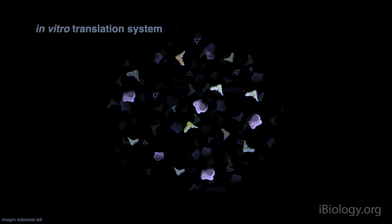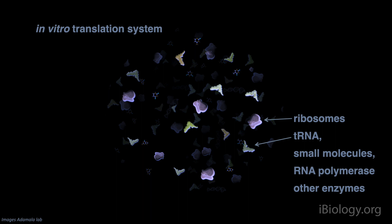The in vitro translation system contains ribosomes, tRNA, RNA polymerases to make mRNA, enzymes to load amino acids into tRNA, and small molecules needed for translation. All of those components are purified and then recombined to encapsulate inside a synthetic cell, creating a synthetic cell cytoplasm.